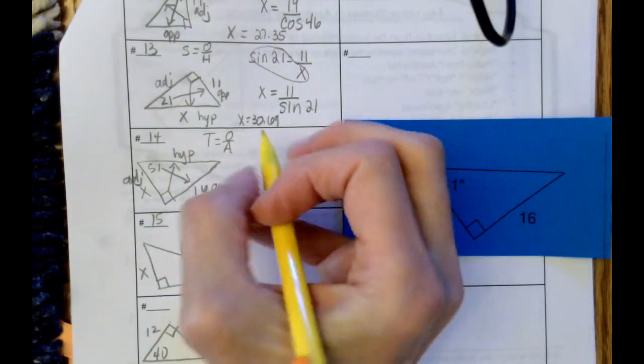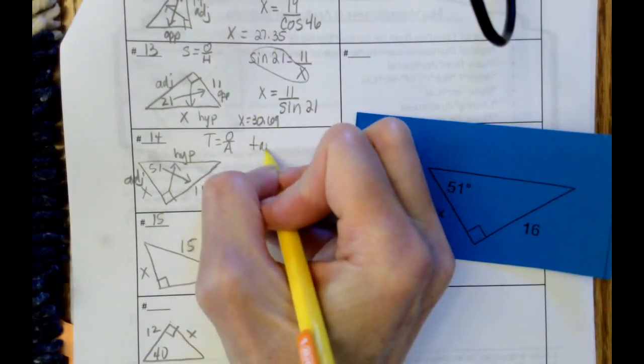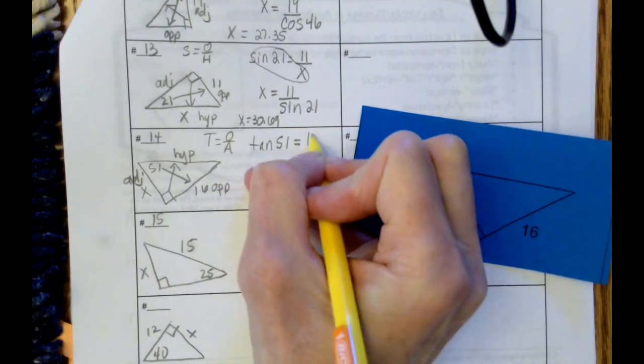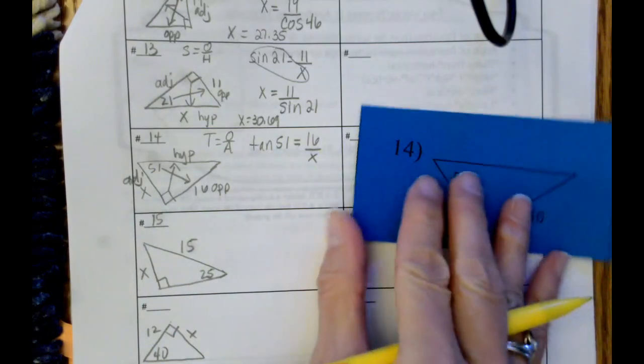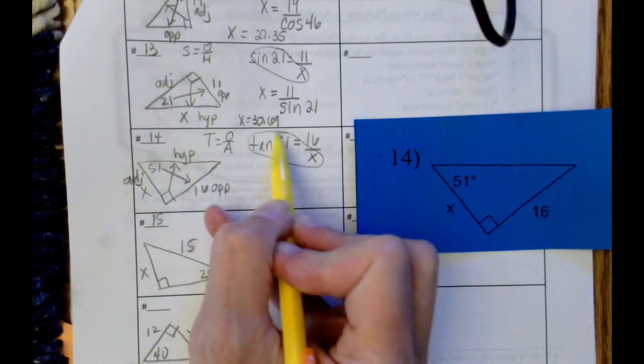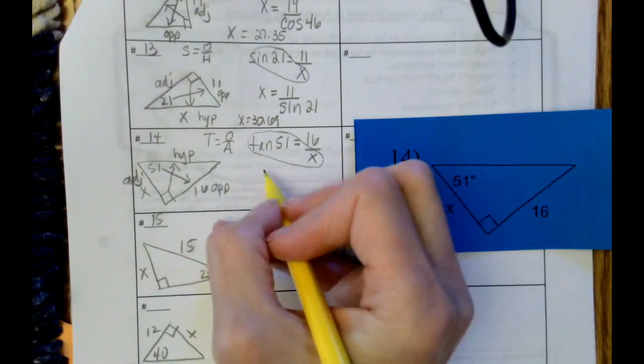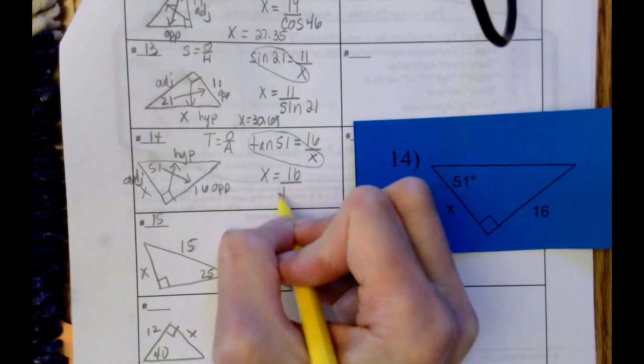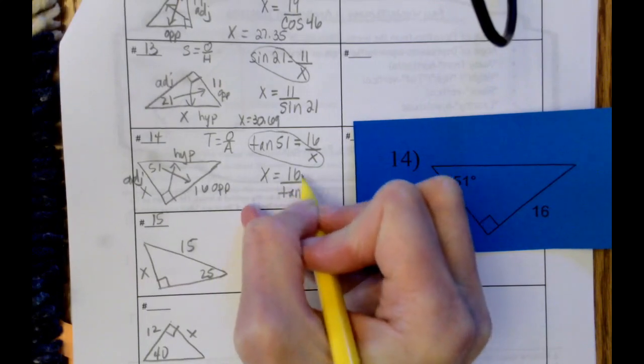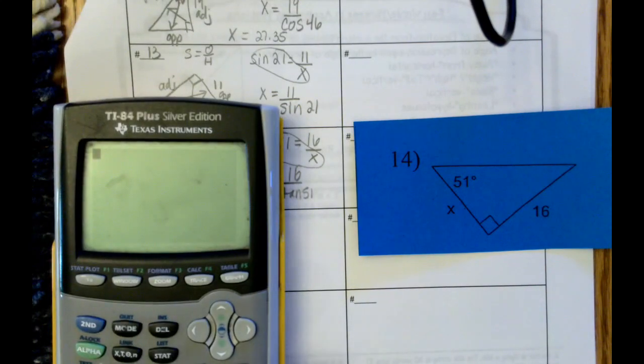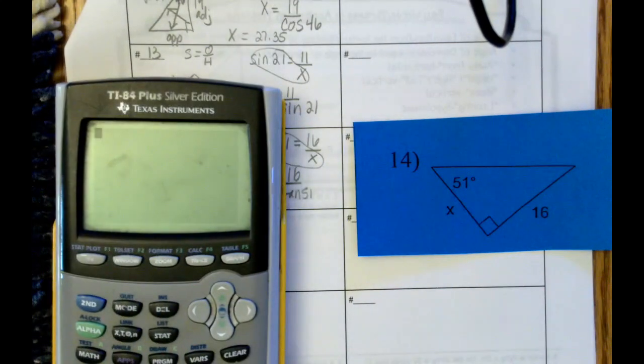So when we set up this function, it's going to be tangent of 51 equals the opposite divided by adjacent. Once again, the variable is in the denominator. When the variable is down low, we're going to switch a row, and we get x equals 16 divided by tangent of 51. And grab the calculator, 16 divided by tangent of 51.